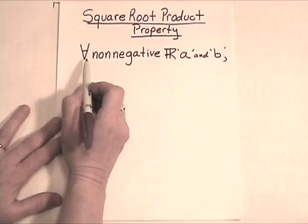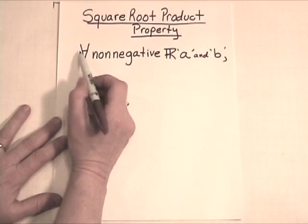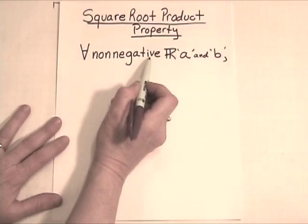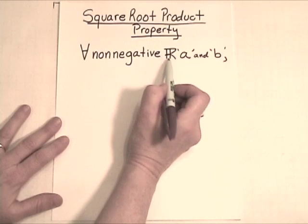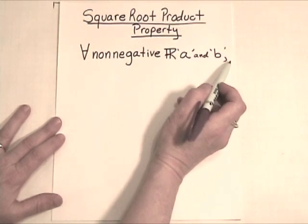It begins like this. For all, remember the upside down A means for all non-negative real numbers. This funky looking R stands for the set of real numbers, and we're going to call them A and B.